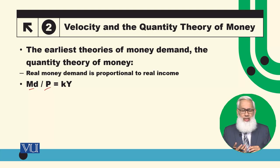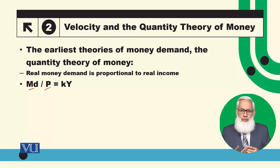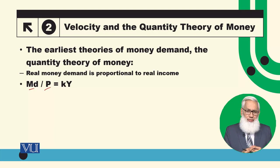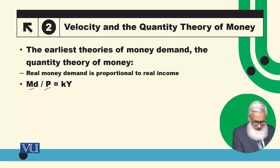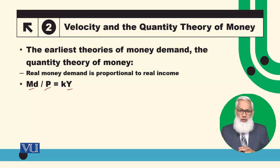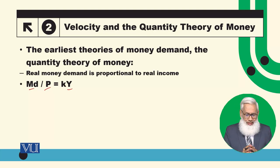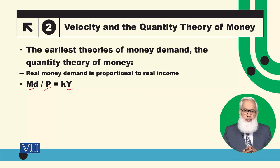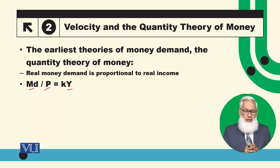As I have mentioned repeatedly, when we divide any nominal variable by the price level, it becomes a real variable. So MD is nominal money demand, P is price level, and this ratio gives real money demand. This equals KY, where K is some constant and Y is real output. So real money demand has a proportional relationship with Y, and that proportion is denoted by K.